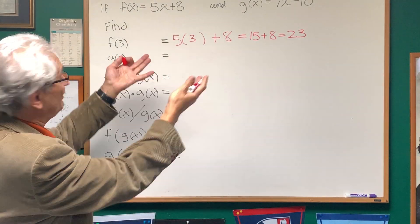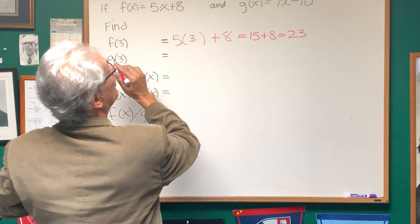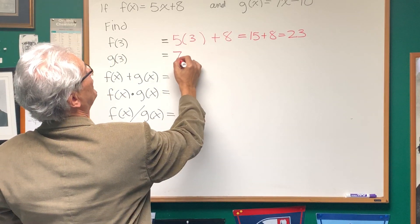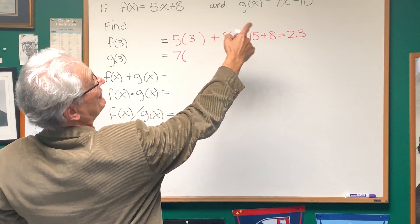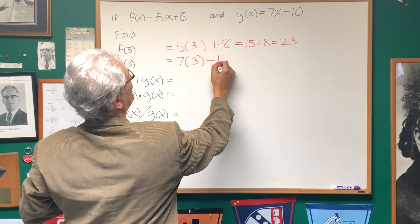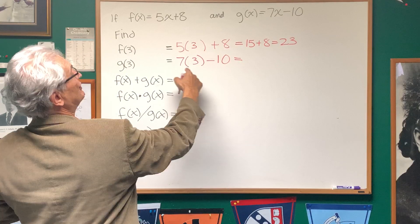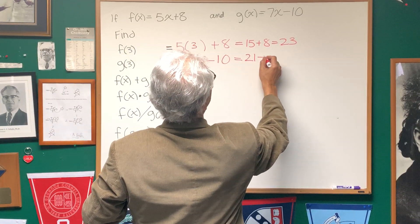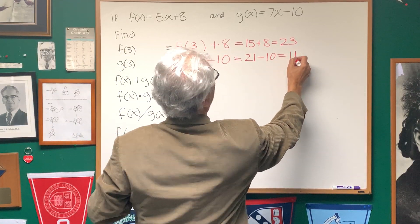We apply the same principle to g(x). What's g(3)? Well, we see that g(x) is 7x minus 10. We replace the x with the 3, and we have 7 times 3 is 21 minus 10, and that gives us 11.